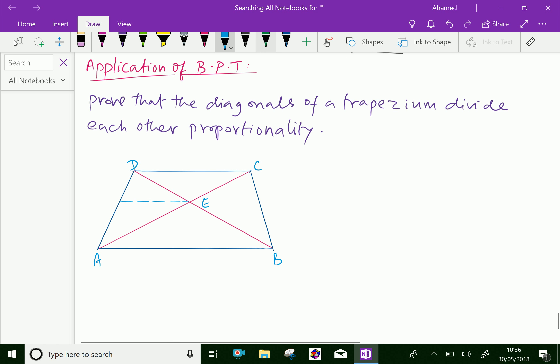Now we will write the given things. Given: A trapezium ABCD in which the diagonals AC and BD intersect at E.